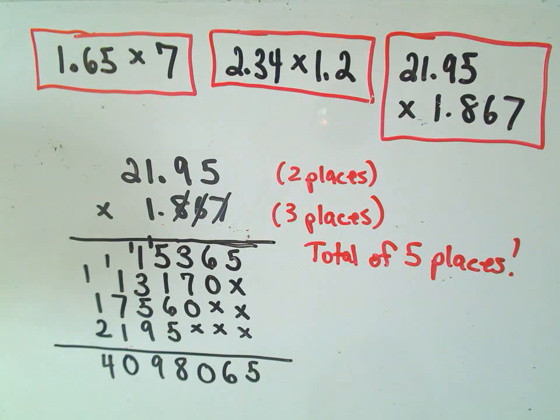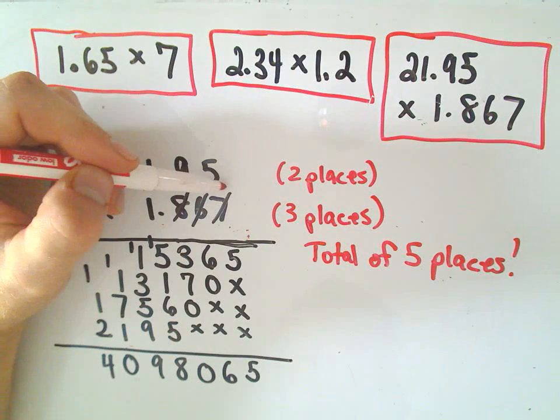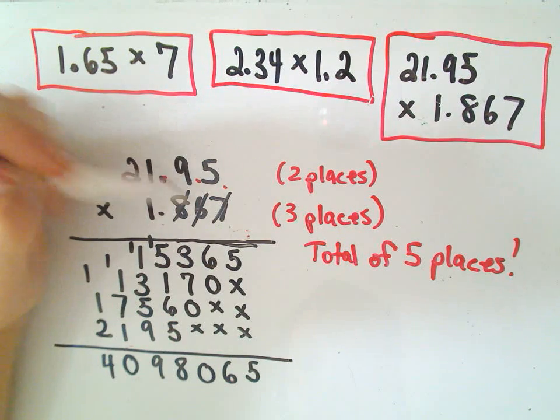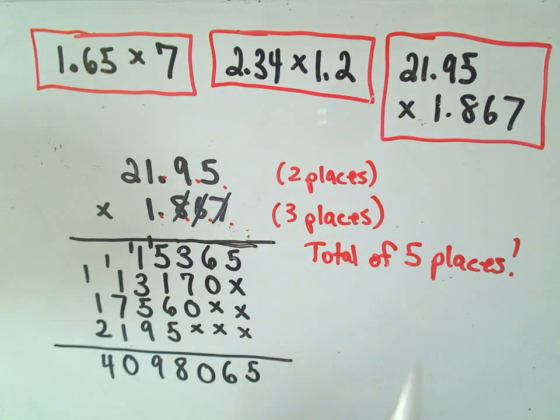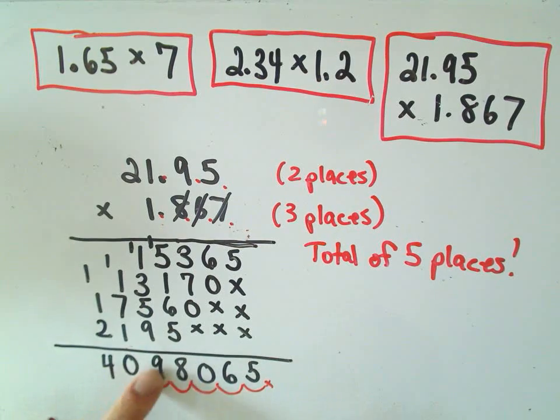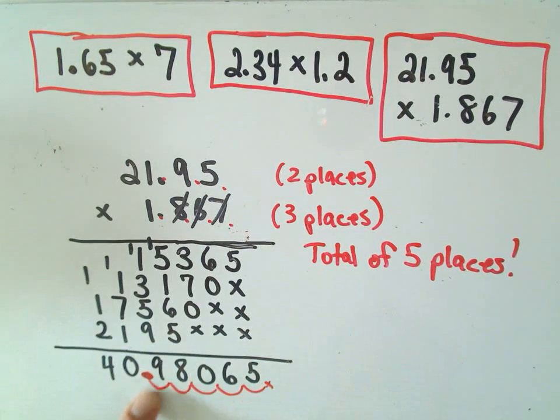Okay, so now, all we have to do is, back to what we did at the beginning, we counted, so I had to move the decimal place over 1, 2 in the first one, 1, 2, 3 in the second one. So we said we had to move it a total of 5 places. So if it starts on the end, it would move over 1, 2, 3, 4, 5. So it says the decimal place should go right there. So it says 21.95 times 1.867 is going to be equal to 40.98065.